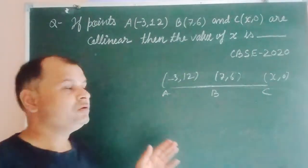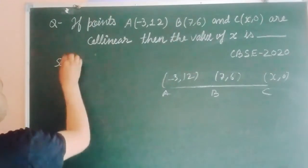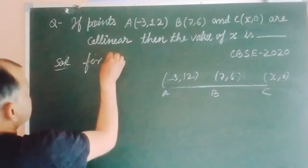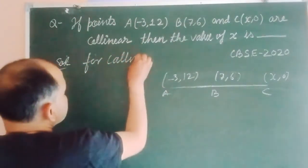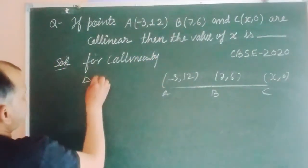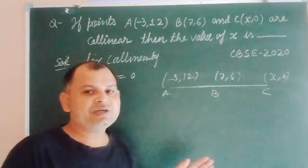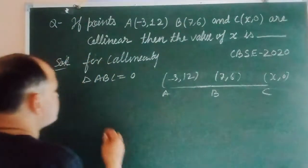So for collinearity, the area of triangle ABC equal to 0. It means triangle is not formed because they are in a straight line.